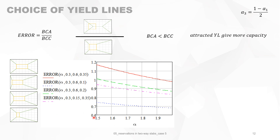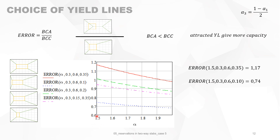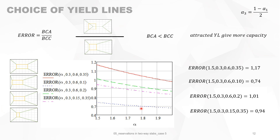You can see in the graph that the error ranges from about 0.6 to 1.2. For example, when alpha is 1.5, looking at the corresponding curve, you need a factor of 1.17 for one curve and 0.74 for another. For all types of holes you will see that sometimes one method is better and sometimes the other, confirming there is no single universally best method.